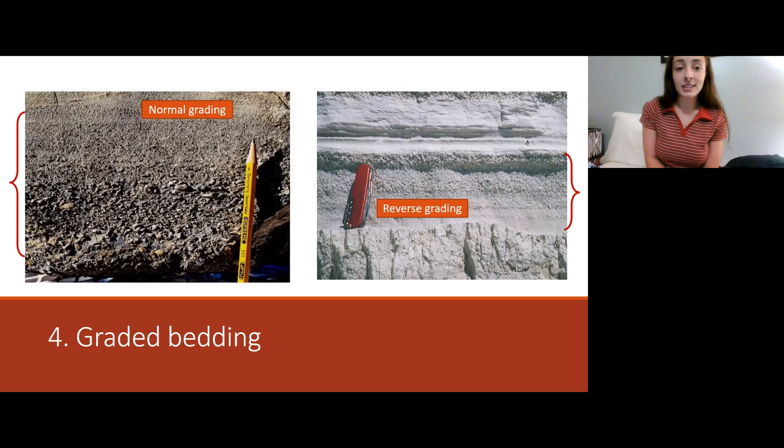Here's graded bedding. Graded bedding is either normal grading or reverse grading. Normal grading is coarse grain to fine grain and reverse grading is fine grain to coarse grain. Now they're not always going to be this recognizable in the strata. Sometimes you really got to get your hand lens out, but it's important to know whether there's graded bedding to help you understand the depositional environment.